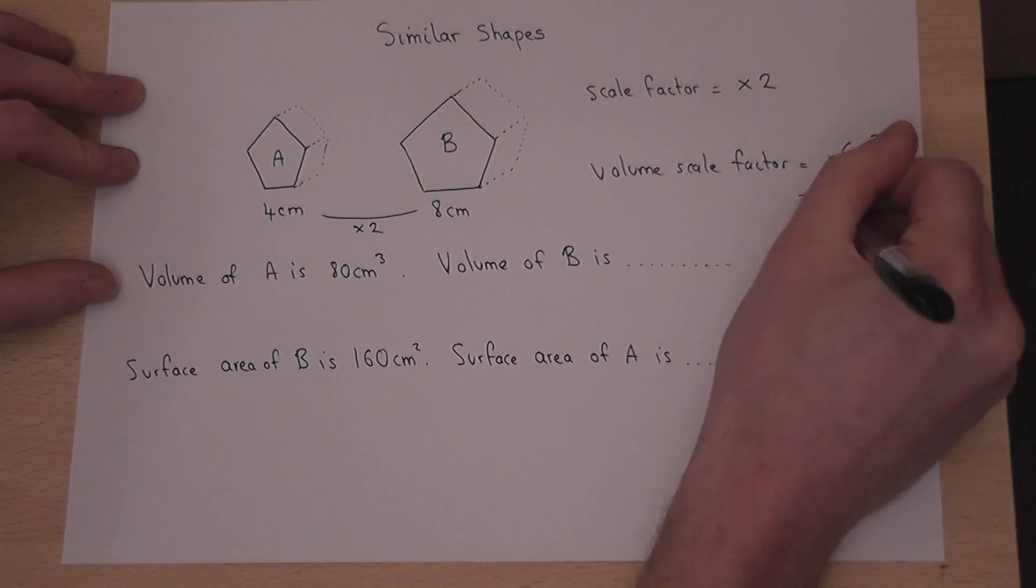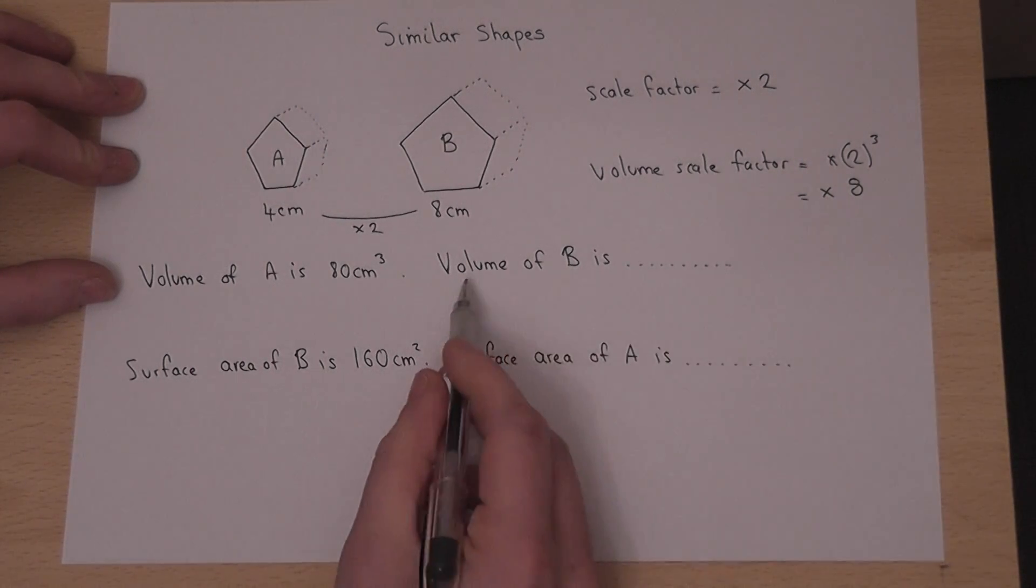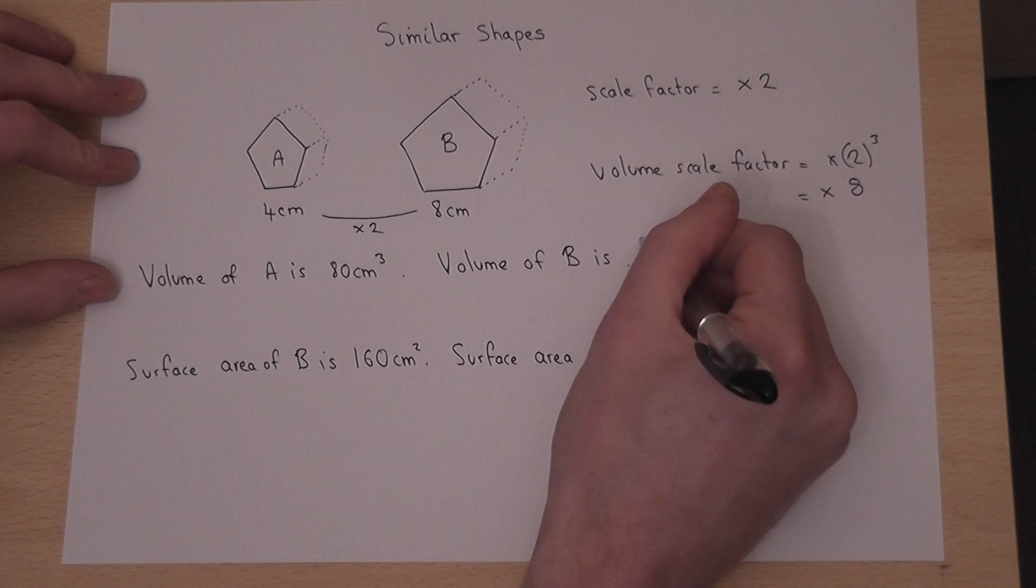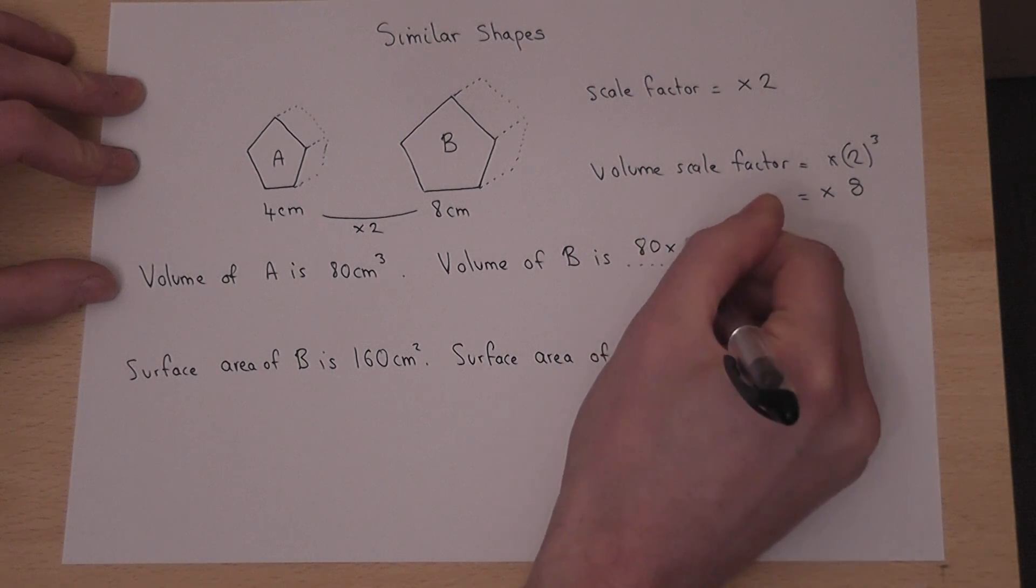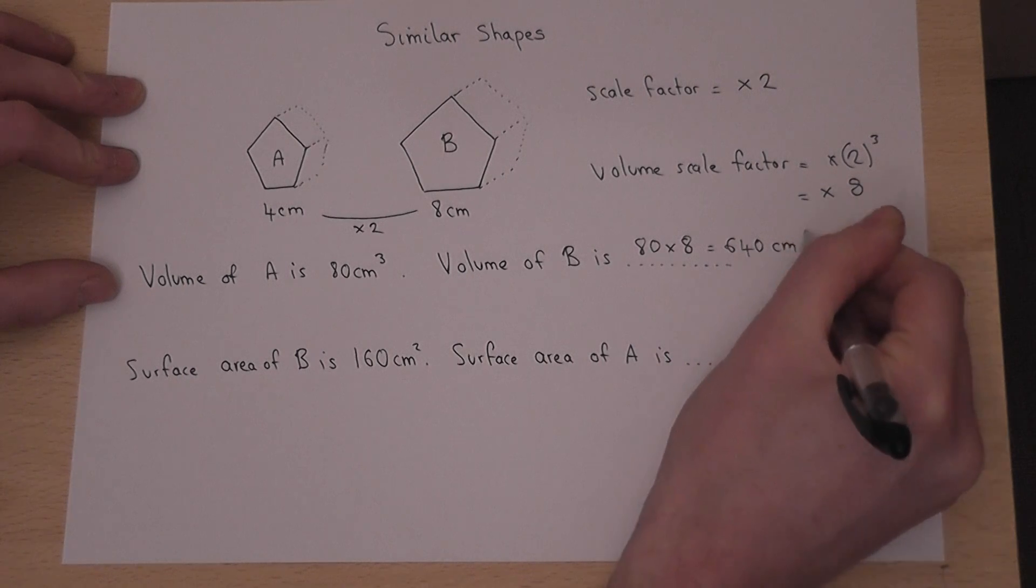Now 2 cubed is 8, so therefore to find the new volume we have to times by 8. So volume of B is 80 times by 8, which is 640 centimeters cubed.